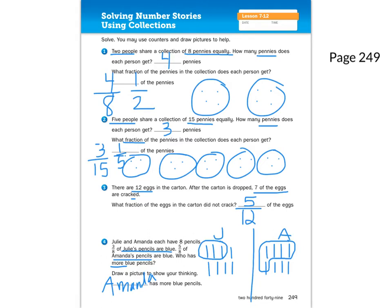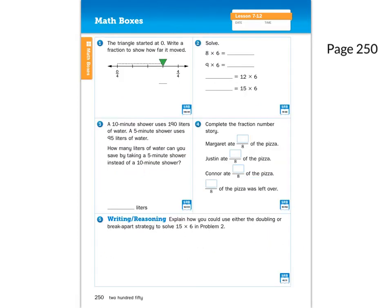This is a short lesson, so we're going to do all of the math box problems today. Number one, you guys are going to do great. Number two, don't forget to use break apart on the trickier ones. Number three, we've had problems like this before — figure out how much water you're using for a 10-minute shower versus a five-minute shower, and you might need to do some subtraction. Number four, complete the fraction number story: Margaret, Justin, and Connor each ate some eighths of the pizza.